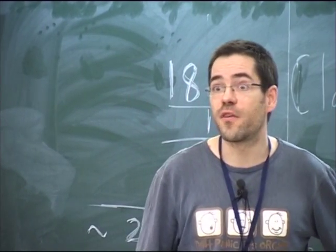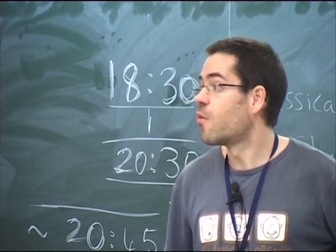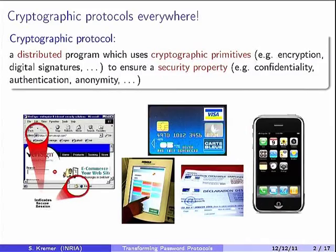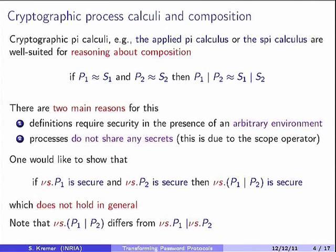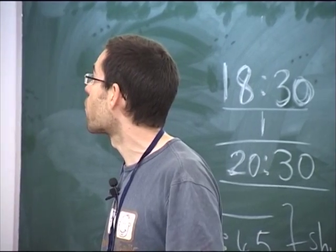The first point is that, by definition, we're defining security as security in the presence of an arbitrary environment. Basically, it's any adversary that they can write in such a pi calculus, because if there is another protocol that would induce an attack, then basically the adversary could simulate this protocol.